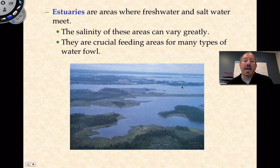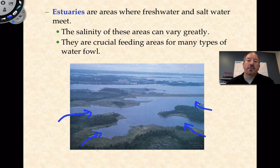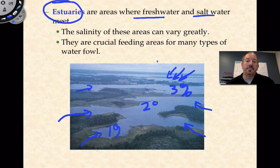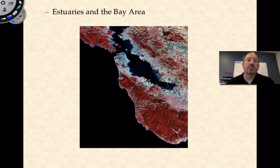An estuary, like San Francisco Bay, is where lakes contribute fresh water and the ocean brings in salty water, so where they mingle is the estuary — where fresh water and salt water meet. The salinity varies: right next to the ocean it's around 3%, and further in it might be 1%, with gradations in between. It'll also depend on the depth of the water. An estuary is a neat environment.